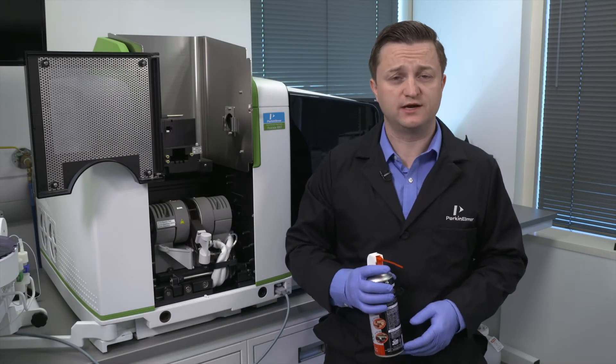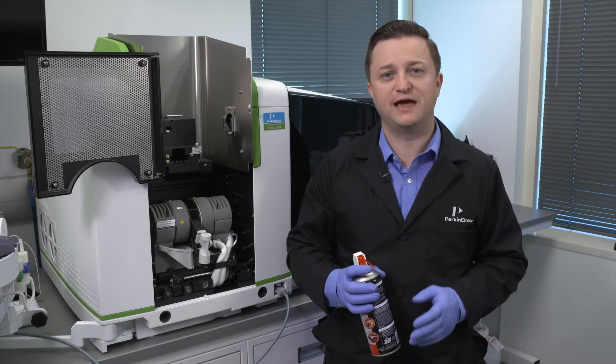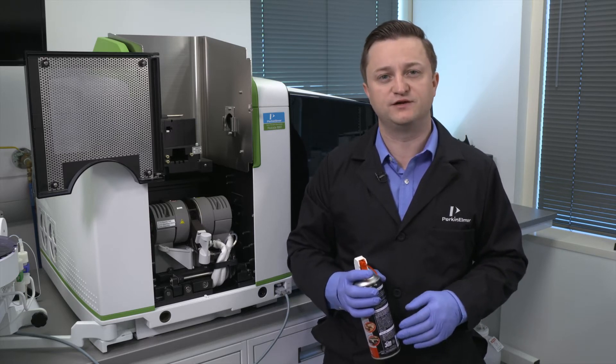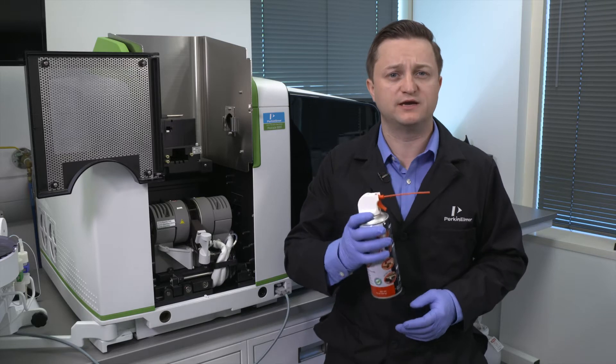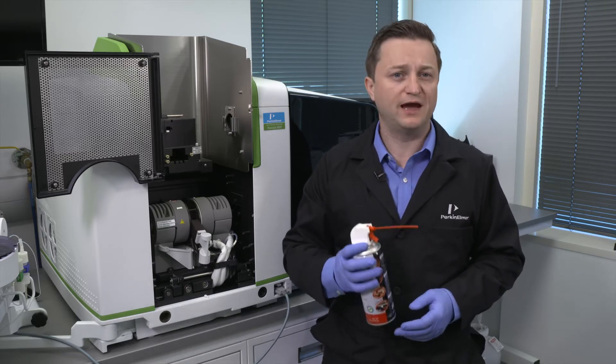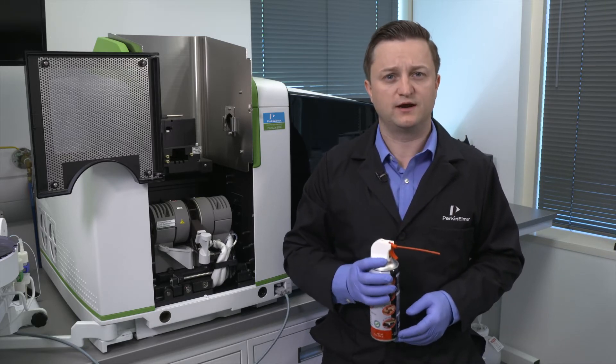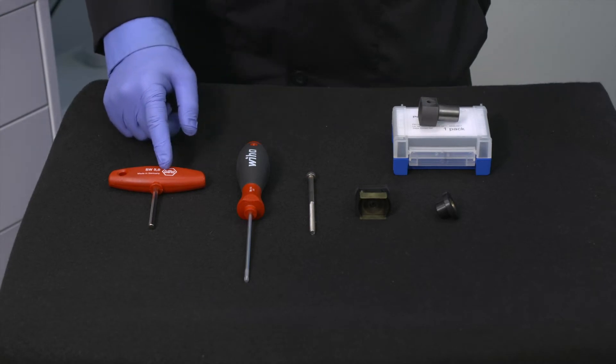Now let's replace the rear contact. Before you do so, make sure the housing is completely free of any debris or particulate matter. Use some clean, dry compressed gas to blow out the housing for the rear contact.